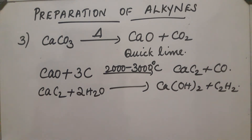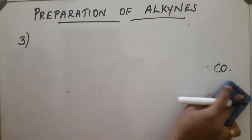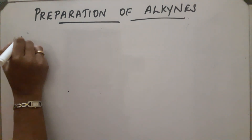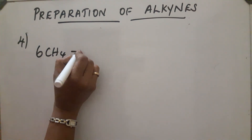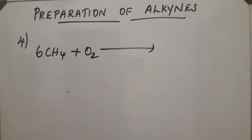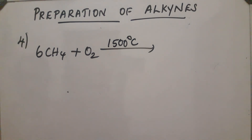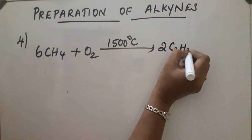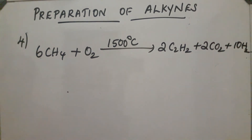One more preparation: acetylene can also be obtained from the partial combustion of methane (CH4). The reaction is: 6CH4 + O2, carried out at a very high temperature of 1500°C. The products obtained are 2C2H2 (acetylene), plus 2CO2, plus 10H2.